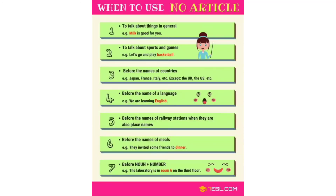We don't use any article when talking about things in general — for example: milk is good for you. We also don't use any article when talking about sports and games: let's go and play basketball. No article is used before the names of most countries like Japan, France, Italy, etc., except for the UK, the USA, etc. We also don't use any article before the names of a language — for example: we are learning English. And no article before the names of meals — for example: they invited some friends to dinner.